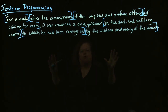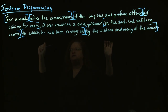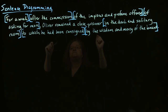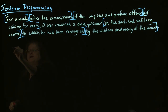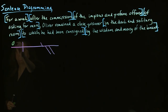Then we have "Oliver remained a close prisoner" — here's our subject and verb. Then we have a subject complement: "a close prisoner." Then we have "in the dark and solitary room" — there's another prepositional phrase. Then "to which he had been consigned" — we have another prepositional phrase, "to," and then "which he had been consigned" is a dependent clause. And then we have "by the wisdom and mercy of the board." So these are the basic components of this sentence that we are now going to want to work into the structure of our diagram.